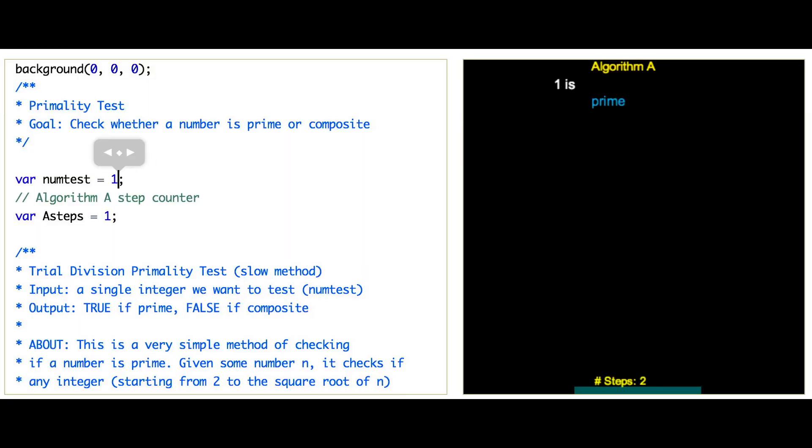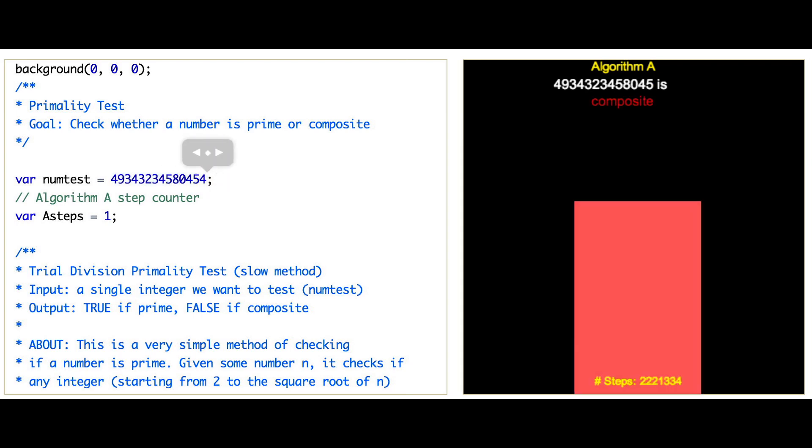Now, we ended up building some solutions to this problem, and in doing so, we realized that this problem was computationally expensive. That is, there was no instant solution to this problem. As our input number grew, the amount of time or the amount of steps involved for our algorithm to find the solution also grew.